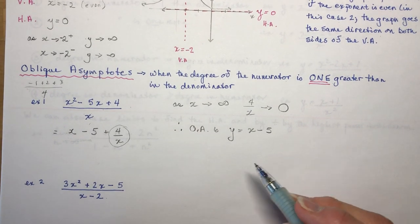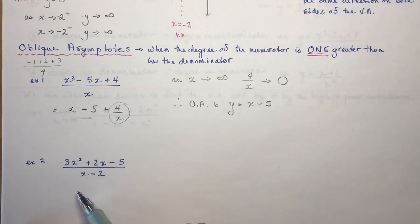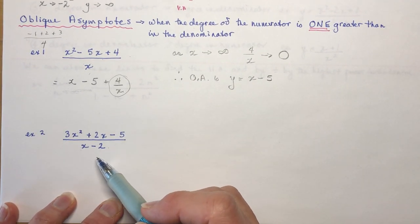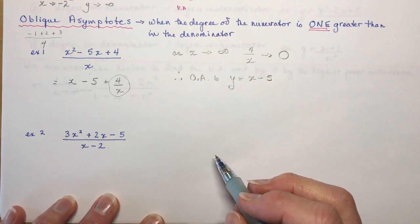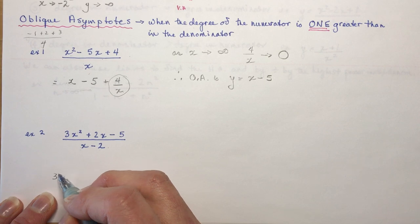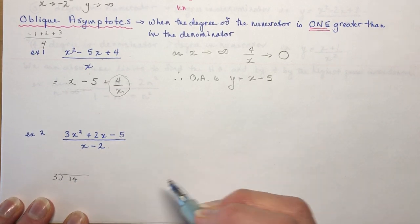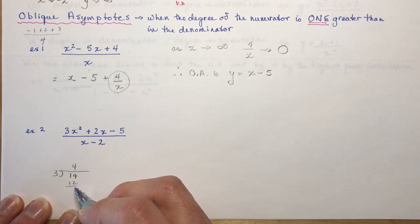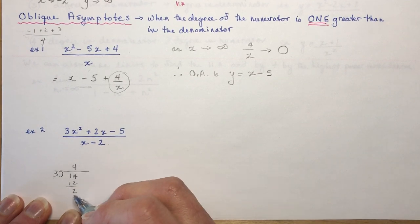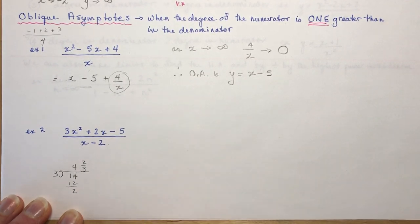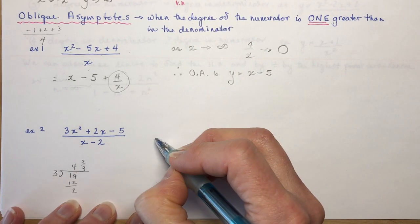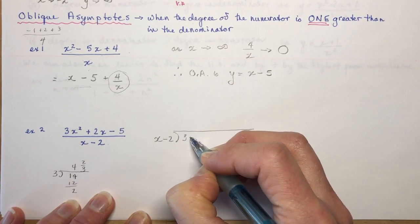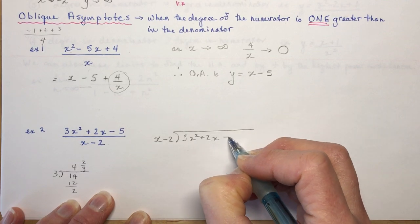What if you can't divide each term individually because the denominator is a binomial like (x−2)? You can't just say 3x² divided by (x−2) term by term — you need long division. Long division works like numeric division: how many times does 3 go into 14? It goes 4 times with remainder 2, giving 4 and 2/3.